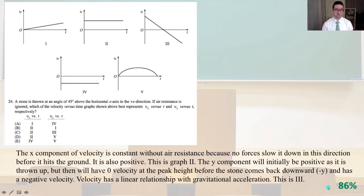Number 24. A stone is thrown at an angle of 45 degrees above the horizontal x-axis in the positive x direction. If air resistance is ignored, which of the velocity versus time graphs shown above best represents v of x versus t and v of y versus t respectively? The x component of velocity is constant without air resistance because no force is slowed down in this direction before it hits the ground.